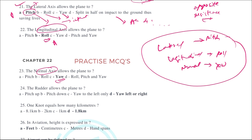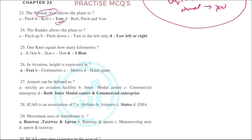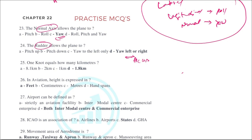These axes help the aircraft take right or left turns, and all maneuvering is controlled by the computer. The rudder is the component which allows the aircraft to yaw left or right. The normal axis allows the plane to yaw, and this yaw movement is achieved with the help of the rudder component.